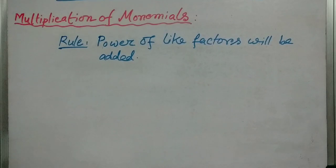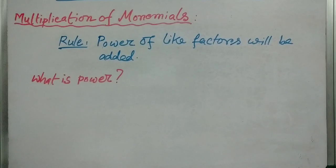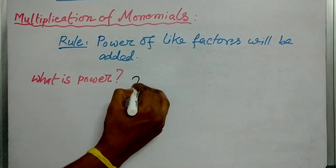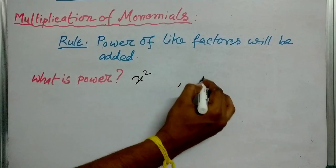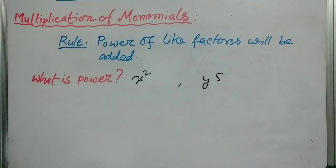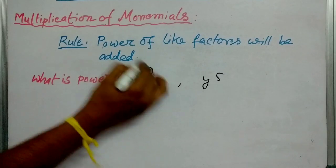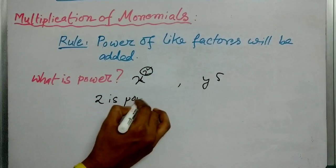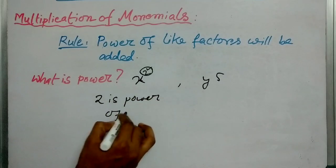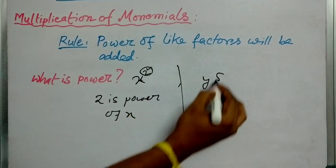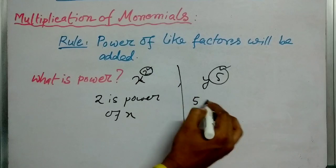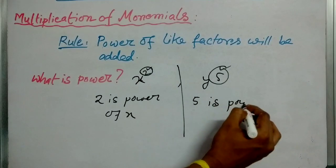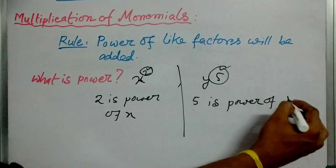Here the rule is: powers of like factors will be added. Now the question is, what is power? Suppose x squared, y to the power 5. Here, this 2 is the power of x, and this 5 is the power of y.